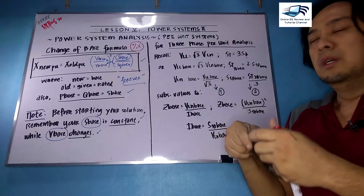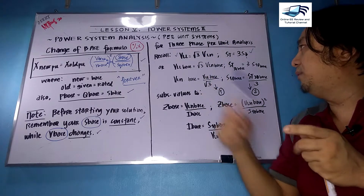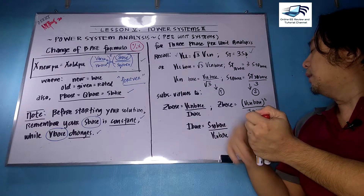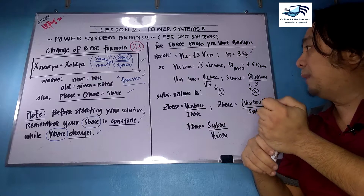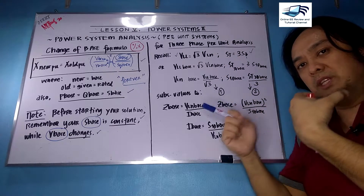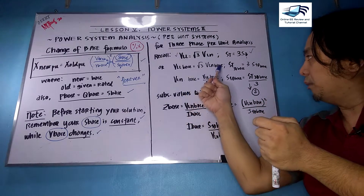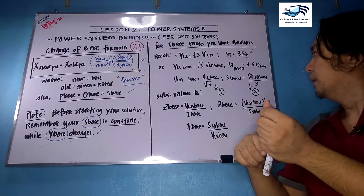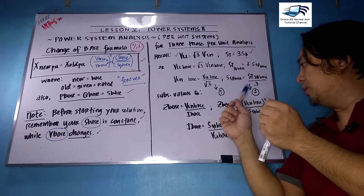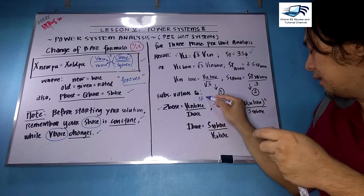For three-phase per unit analysis, we have these formulas from your balanced polyphase system. In terms of line-to-line and line-to-neutral: V line-to-line equals square root of three times V line-to-neutral, and total apparent power equals three times the per-phase power. For the bases, S total is three-phase and S phase is single-phase. Rearranging terms, V line-to-neutral equals V line-to-line over square root of three, and S single-phase equals S three-phase divided by three — equations one and two.